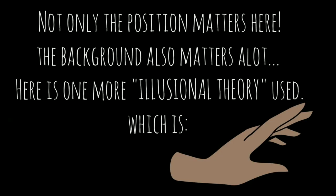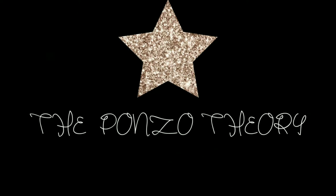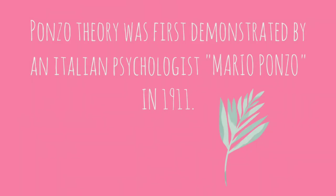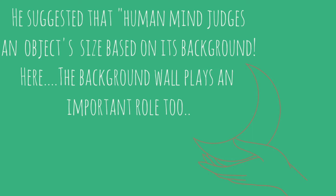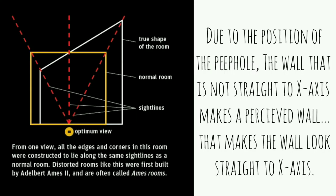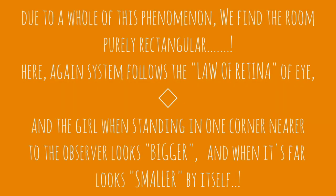Not only the position matters here — the background also matters a lot. Here is one more illusional theory used, which is the Ponzo theory. The Ponzo theory was first demonstrated by the Italian psychologist Mario Ponzo in 1911. He suggested that the human mind judges an object's size based on its background. The background plays an important role too. Due to the position of the peephole, the wall that is not straight to the x-axis makes a perceived wall that looks straight to the x-axis, making the room appear purely rectangular.